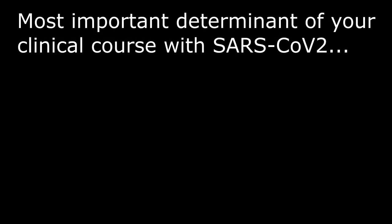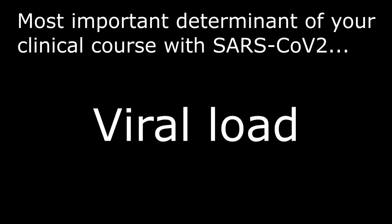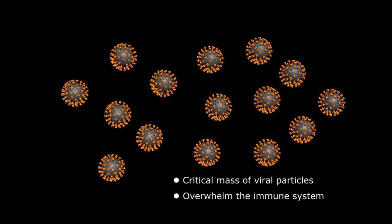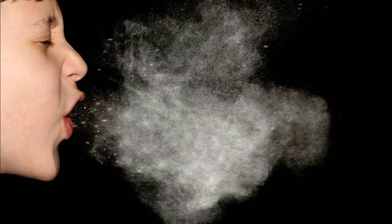In my opinion, the most important determinant of your clinical course with a SARS-CoV-2 infection is ultimately your viral load. Because of the haphazard way these mRNA viruses replicate, once you reach a critical mass of viral particles, you overwhelm the immune system inciting a cytokine storm and fulminant COVID-19 clinical course.